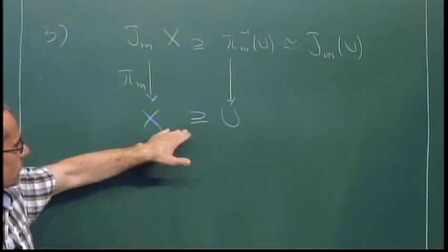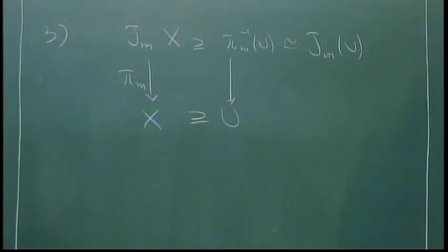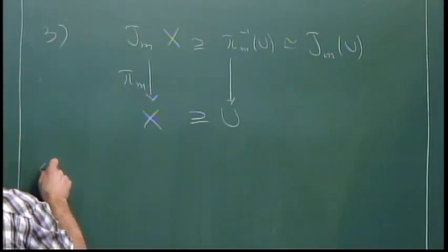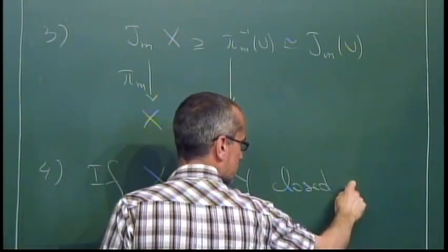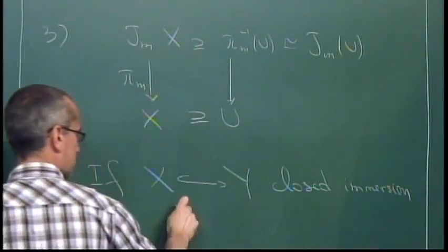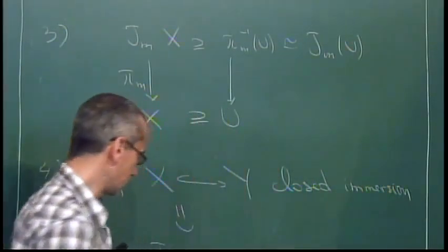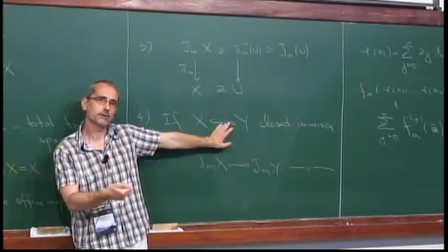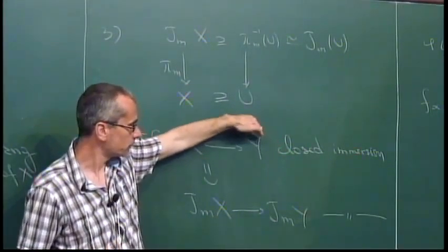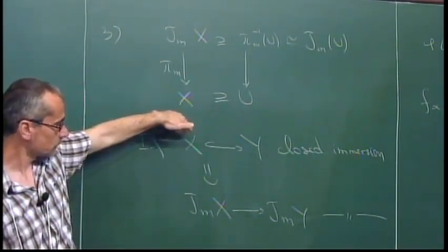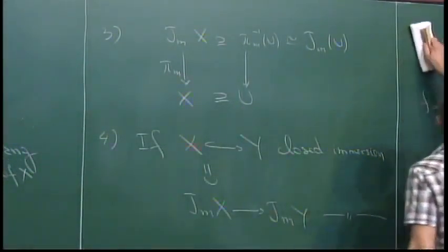Slightly less trivial, but which follows immediately from the description in terms of equations: if X is a closed subscheme of Y — a closed immersion — then the induced map from J_M(X) to J_M(Y) is also a closed immersion. This is because locally, from one set of equations for X in Y, the equations for J_M(X) are obtained by adding the corresponding truncated equations to those of J_M(Y).